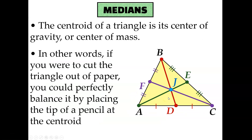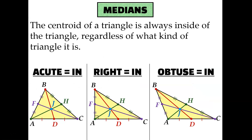The other interesting thing about the centroid is that it's actually the center of gravity, or center of mass. So if you were to cut a triangle out of paper or wood, you could balance it perfectly on the tip of a pencil at the centroid. Medians are similar to angle bisectors in that their point of concurrency will always be inside the triangle — whether it's acute, right, or obtuse, it doesn't matter. The centroid will always be inside, which makes sense given that it's the center of mass.